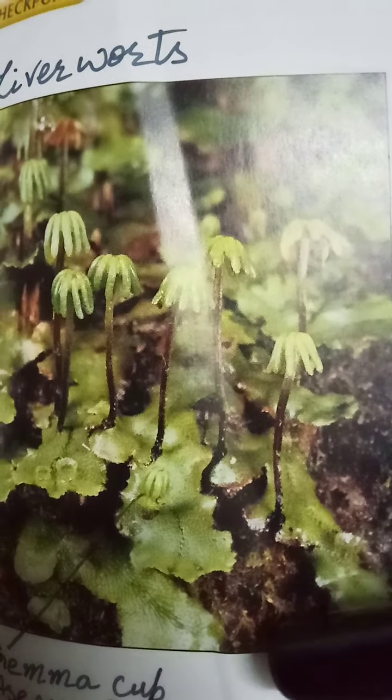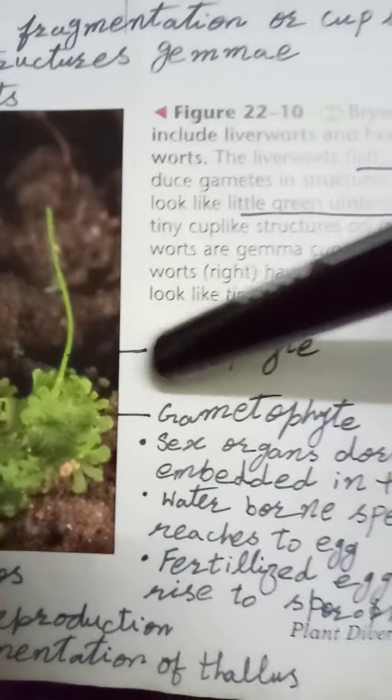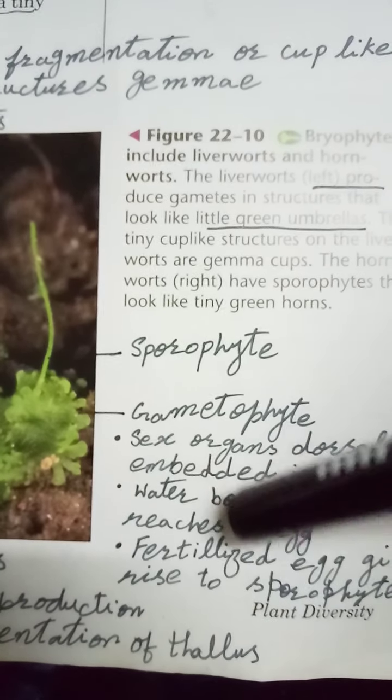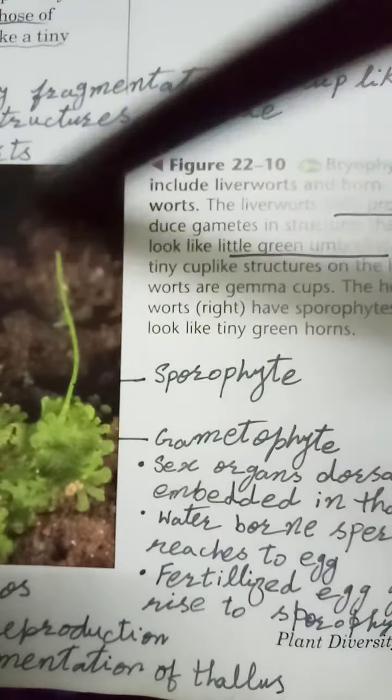The third class is Anthocerotopsida, also known as hornworts. These structures get their name from the sporophytic phase, which looks like the horn of an animal. The gametophytic phase is dominant. Sex organs are dorsally embedded in the thallus, and water-borne sperm reach the egg. After fertilization, the zygote develops into the sporophytic phase. Asexual reproduction occurs by fragmentation of the thallus, which can break anywhere and develop into a new individual.